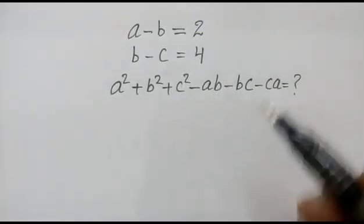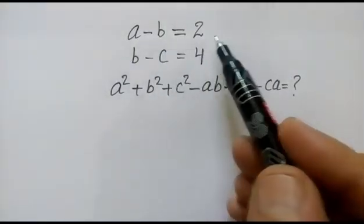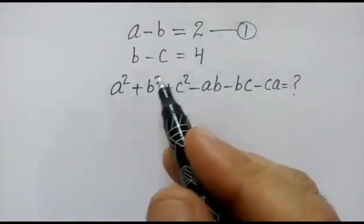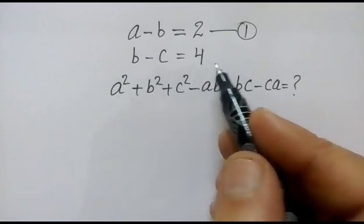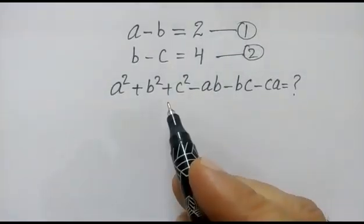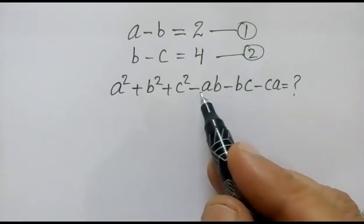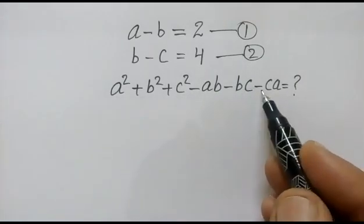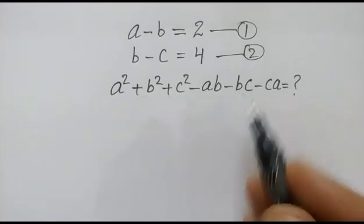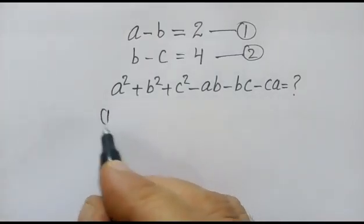Hi friends, we have given two equations: a minus b is equal to 2 (equation 1) and b minus c is equal to 4 (equation 2). We have to find out the value of a squared plus b squared plus c squared minus ab minus bc minus ca. So let's start — first we will add equation 1 and equation 2.